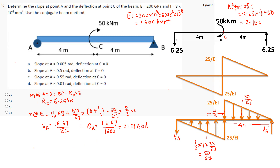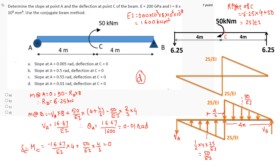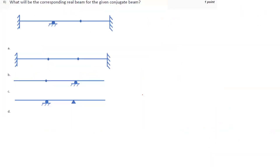Now we are interested in deflection at C, which corresponds to the moment at C in the conjugate beam. That equals VA acting anticlockwise: minus (16.67/EI) × 4 plus (50/EI) × (4/3), which gives minus 16.67 × 4 plus 200/3, and this comes out to 0. Therefore deflection at C is zero, and the answer is option D: slope = 0.01 radians, deflection at C = 0.